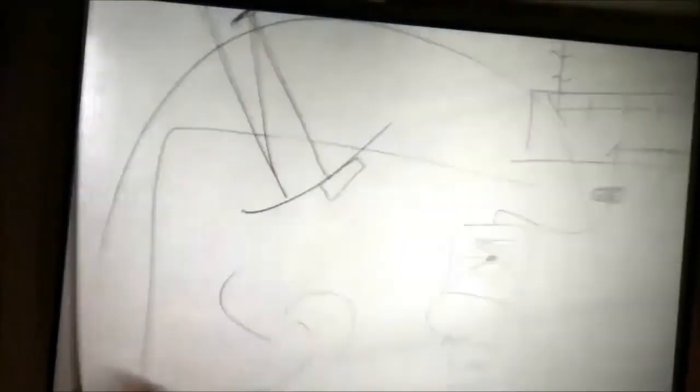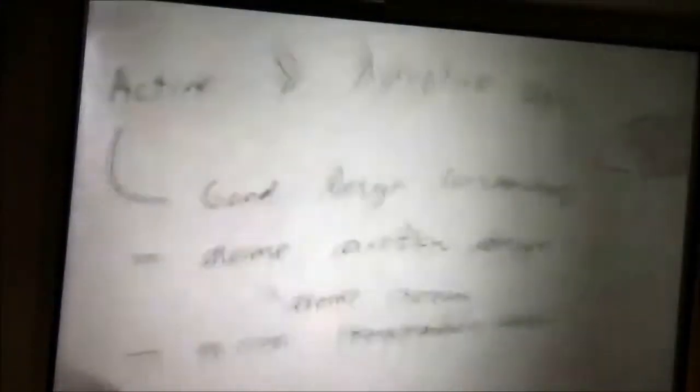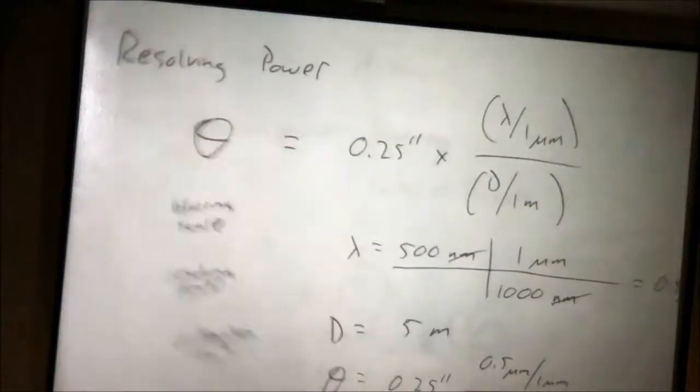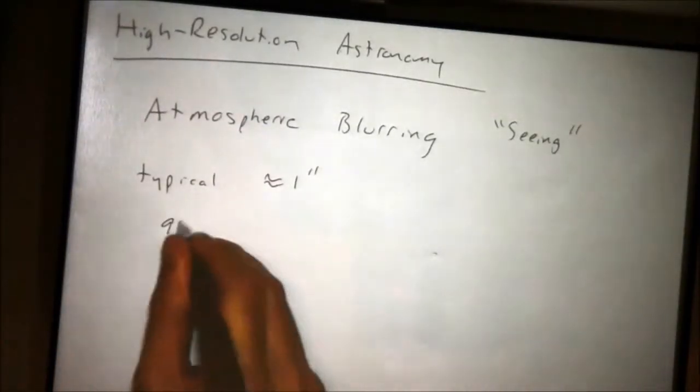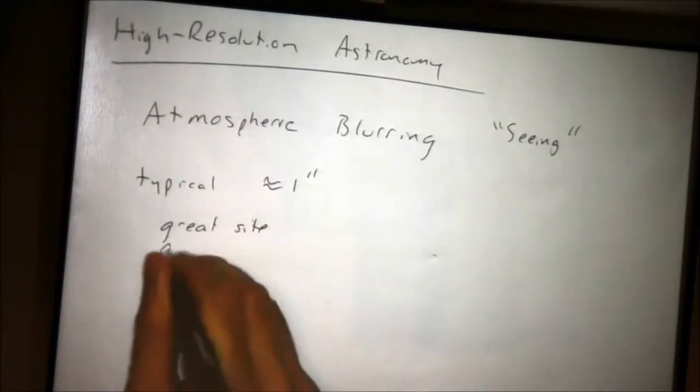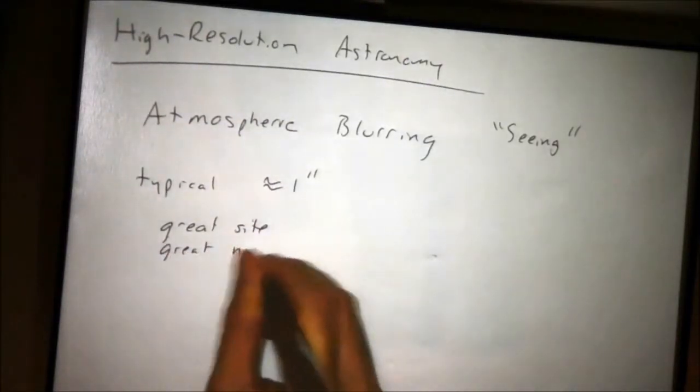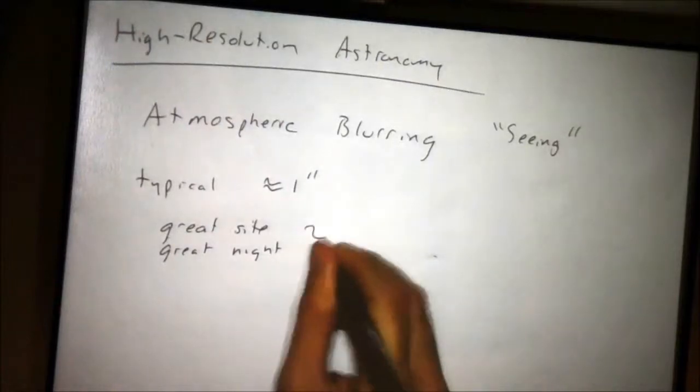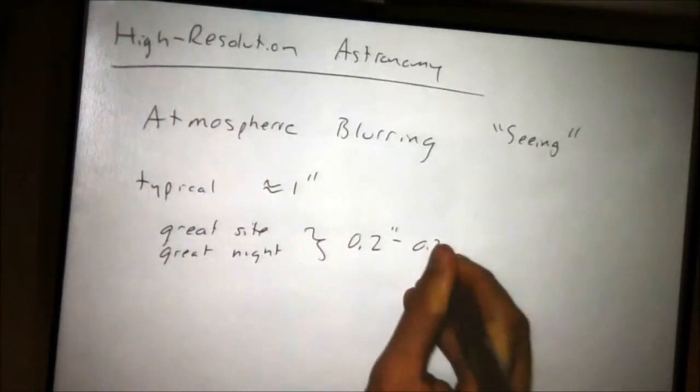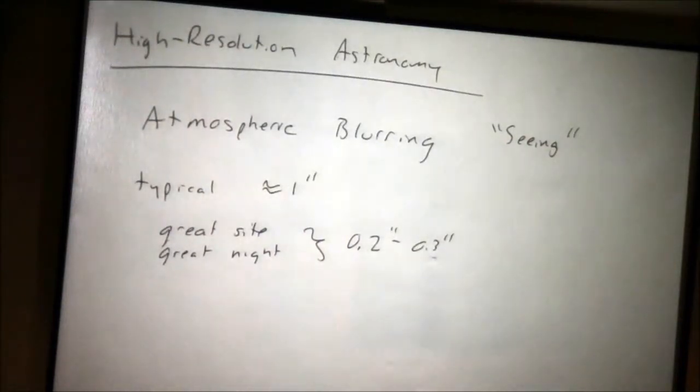A typical seeing or atmospheric blurring is about one arc second. Again, it's much, much bigger than this number that we just computed somewhere back here, 0.025 arc seconds. So this is a very significant effect. On a great night at a great site where the conditions are just perfect, it can get down to like 0.2 to 0.3 arc seconds, but still nowhere close to the diffraction limit of the telescope.